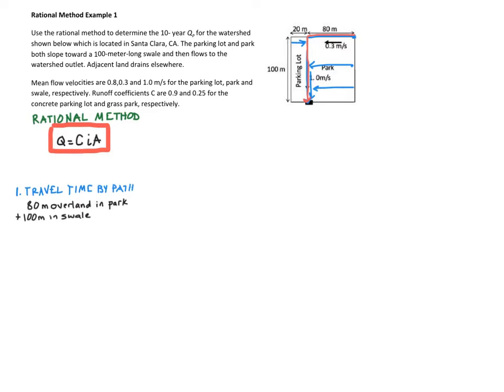And so this first one, that 80 meters over land flow in the park, if we calculate the travel time, we're going to have the distance, 80 meters, divided by the given velocity, which is 0.3 meters per second, okay? Which is, this is 267 seconds, okay? And then in the swale, I have 100 meter distance divided by the velocity of 1.0 meters per second, which gives us 100 seconds total.